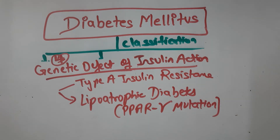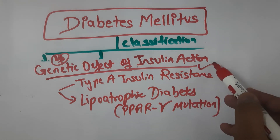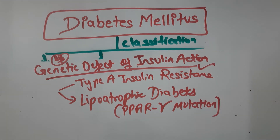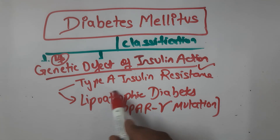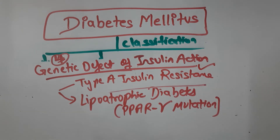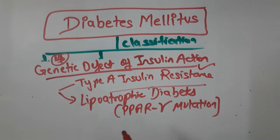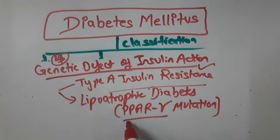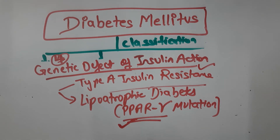The fourth type involves genetic defects of insulin action. There are two subtypes: Type A insulin resistance, and lipodystrophic diabetes. Lipodystrophic diabetes is due to a PPAR-gamma mutation — a gene we will also encounter in the pathogenesis of Type 2 diabetes mellitus.